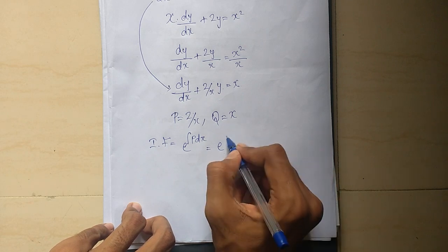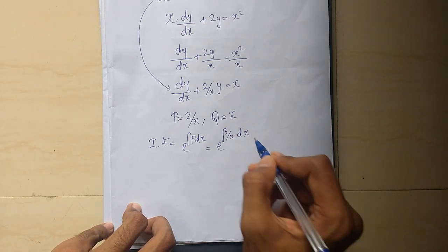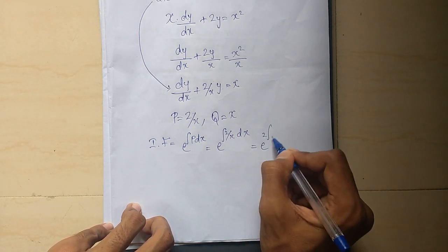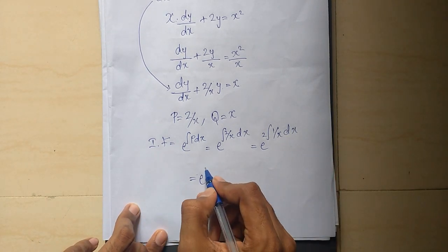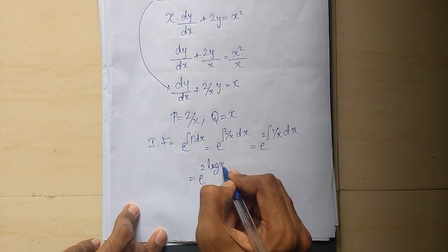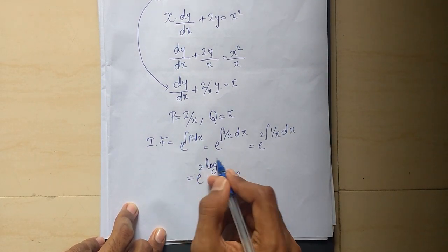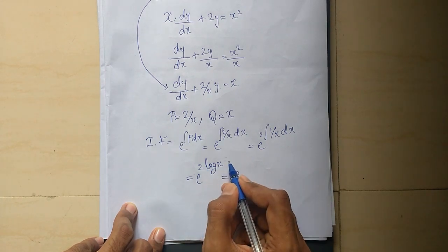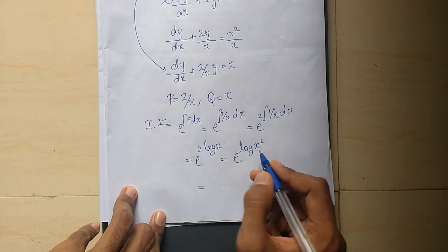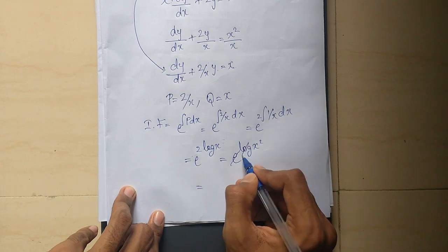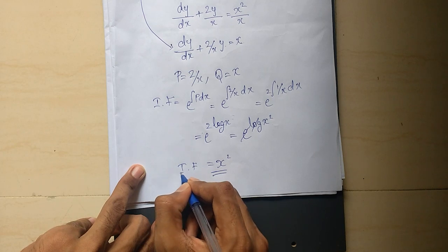The integrating factor is e raised to the integral of 2 by x dx, which equals e raised to 2 log x, which is e raised to log x squared. So the integrating factor is x squared.